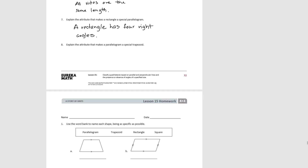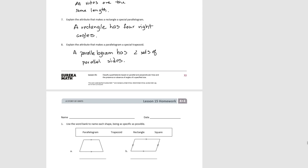Stop the video and try number eight. What makes a parallelogram a special trapezoid is that a parallelogram has two sets of parallel sides. And that concludes lesson 15.